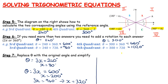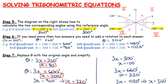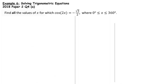The key issue students face is dividing by 3 too early, before adding rotations. By replacing 3x with θ first, and only dividing at the very end, you avoid this mistake. With practice you may work more efficiently, but starting with this structured approach prevents the most common errors.